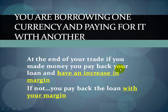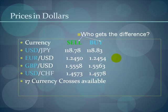It's important to understand that you are borrowing one currency and paying for it with another. At the end of your trade, if you make money you pay back your loan and have an increase in your margin from the profit. If not, you still pay back the loan — in that case you pay it back with your margin. That's the reason the broker is holding collateral.